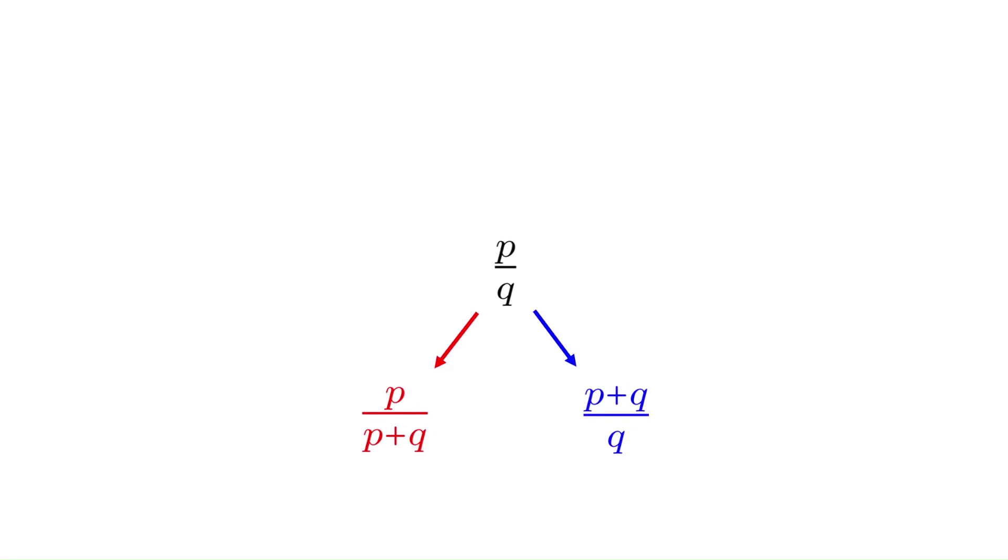Here's the familiar picture of the left and right rules. Algebraically, we can undo these rules as follows. To make a backward-right movement, we subtract Q from the numerator. And to make a backward-left movement, we subtract P from the denominator.